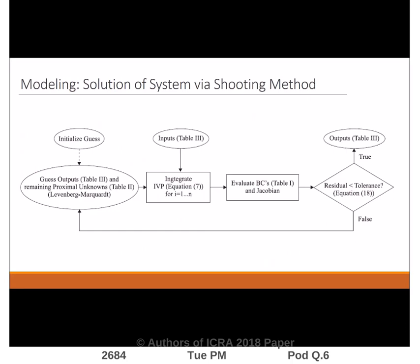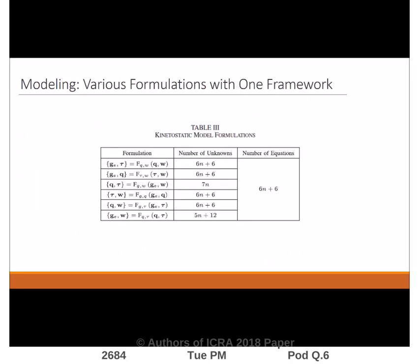We use an efficient shooting method to solve for all the model outputs and unknown proximal boundary conditions. By simply changing which set of variables are specified and which sets are unknown, this framework can seamlessly solve various useful problems such as the forward kinematics under known loads.